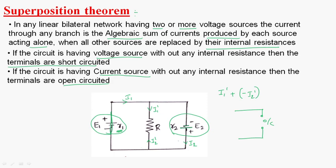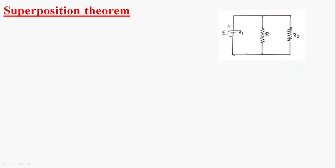Now I will explain the superposition theorem using this network in a step-by-step manner. Here we have two voltage sources, E1 and E2. First, the E2 source is replaced with its internal resistance R2.